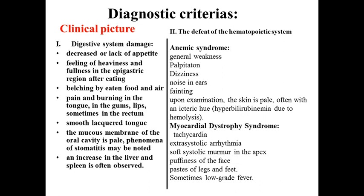Sometimes we see enlargement of the liver and spleen, because here we have formation of large-sized erythrocytes that are quickly destroyed when passing through small vessels. They are destroyed in the spleen and liver, causing mild enlargement of both organs.